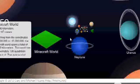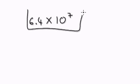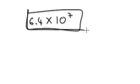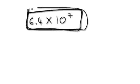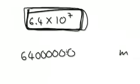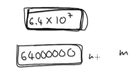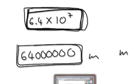6.4 times 10 to the power of 7 — I don't understand how a world of Minecraft could be that big, but anyway, to get an idea of how long it is in meters: 6, 4, then 1, 2, 3, 4, 5, 6 zeros. So the world of Minecraft is 64,000,000 meters.